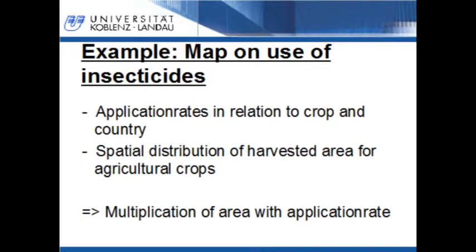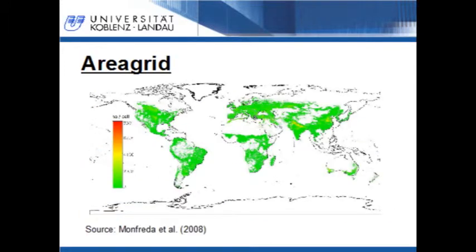Parameters you need to develop these maps are the application rate in relation to the crop and the country, and the spatial distribution of the harvested area for the different crops. To calculate the applied amount per area, you have to multiply the application rate with the harvested area. For this work, I use the harvested area grids described in the publication from Monfreda et al., published in 2008. This dataset contains grids which represent the harvested area for 175 crops at a resolution of 5 arc minutes.